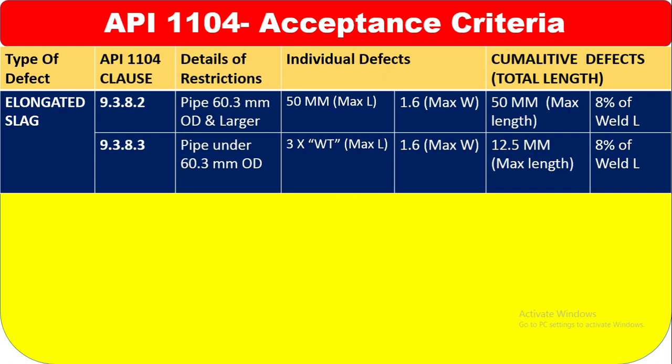For cumulative defects in clause 9.3.8.2, 50 mm maximum length is acceptable, otherwise you cannot accept — that is 8% of the weld length. For clause 9.3.8.3, pipe under 60.3 mm OD, the maximum length is 3.3 times wall thickness, and the maximum width is 1.6 mm. That is for individual defect.